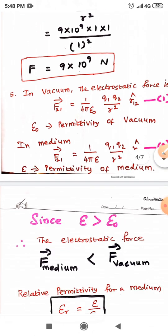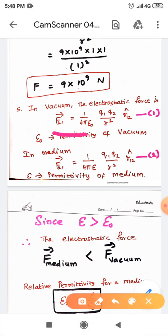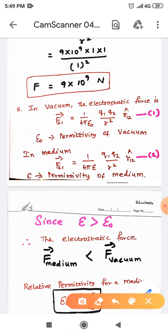In point number 5, in vacuum, the electrostatic force is F21 = (1/4πε₀) × Q1 Q2 / R² × R12 cap, where epsilon naught is the permittivity of vacuum. Suppose the two point charges are placed in a medium — such as water or oil — then the equation becomes F21 = (1/4πε) × Q1 Q2 / R² × R12 cap, where epsilon is the permittivity of the medium instead of epsilon naught.